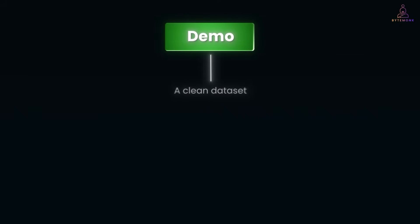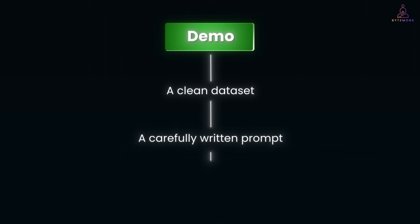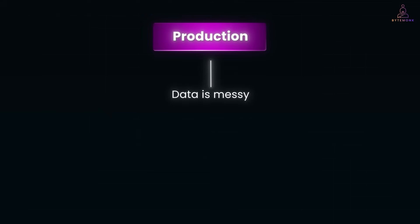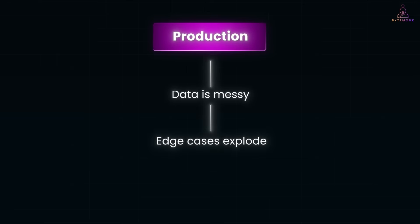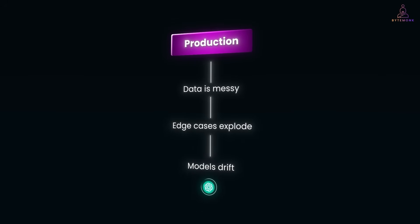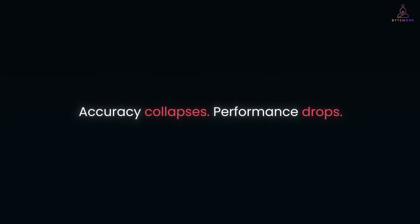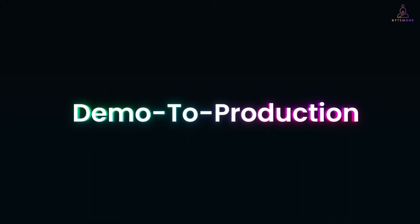They have also given me early access to test drive their platform. Normally in a demo, you have a clean dataset — maybe a few PDFs, some neat text examples, a carefully written prompt that works for that small sample, and a model that looks accurate because you've already tuned it for the showcase. But in production, data is messy. Customers upload scanned images, half-failed forms, or documents in unexpected formats. Edge cases explode — maybe one client writes 'not applicable' in the address field, or another puts the phone number in a notes section. The prompt that looked perfect in the demo doesn't hold up across thousands of real inputs. Accuracy collapses, performance drops, and the AI app that seemed brilliant in the demo becomes a liability. This is the demo-to-production gap — and here is the technical part that makes Impromptu different.